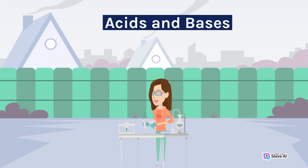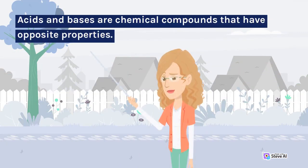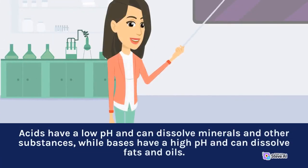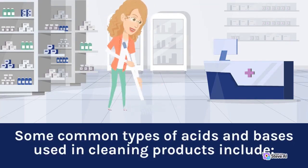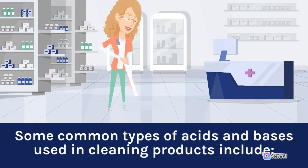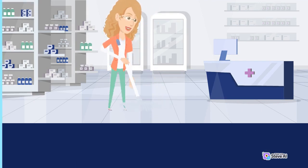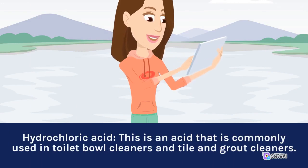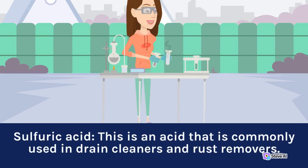Acids and bases are chemical compounds that have opposite properties. Acids have a low pH and can dissolve minerals and other substances, while bases have a high pH and can dissolve fats and oils. Some common types include: Hydrochloric acid, commonly used in toilet bowl cleaners and tile and grout cleaners; and Sulfuric acid, commonly used in drain cleaners and rust removers.